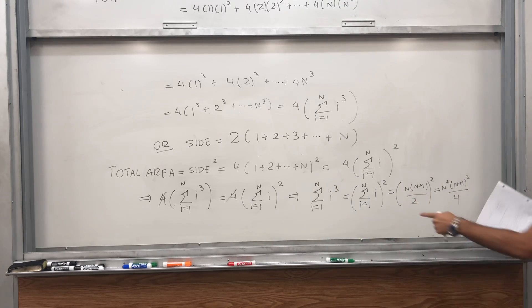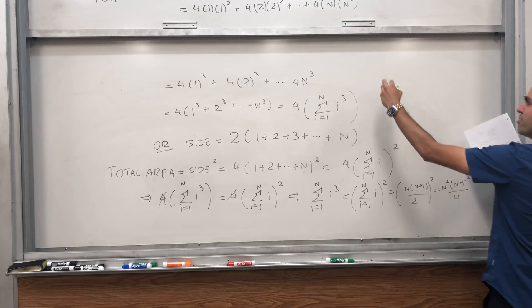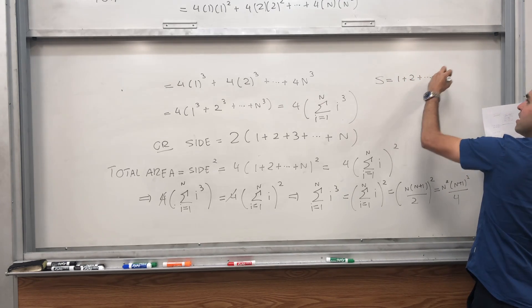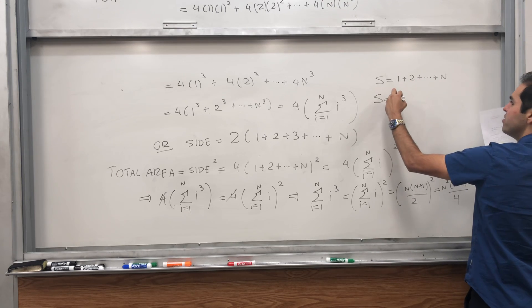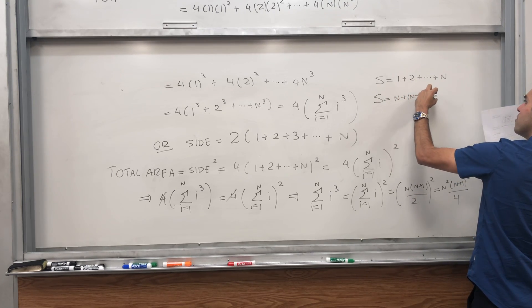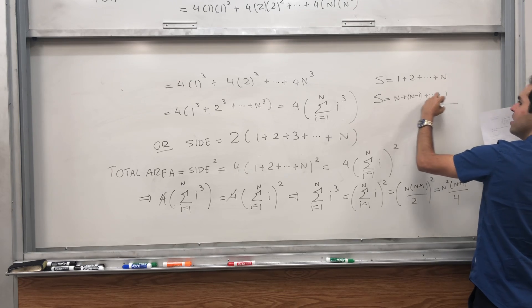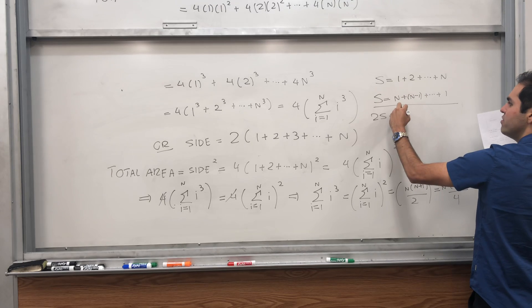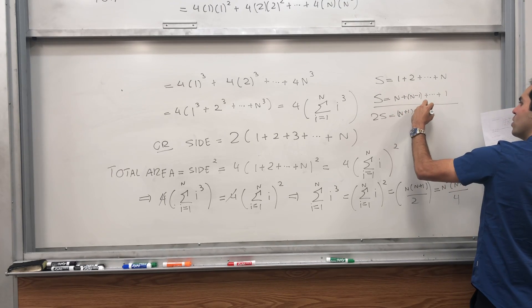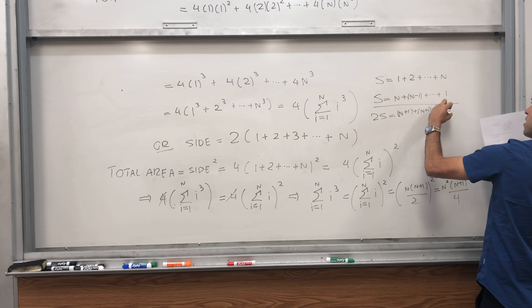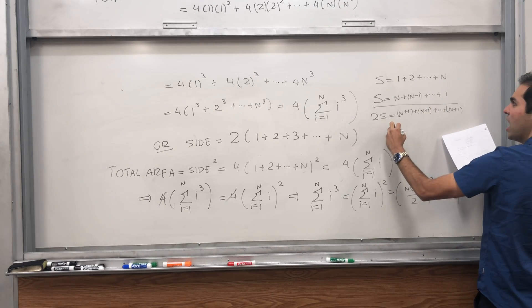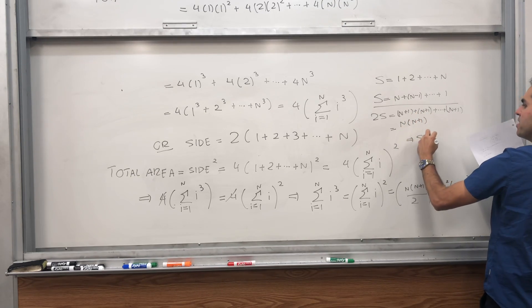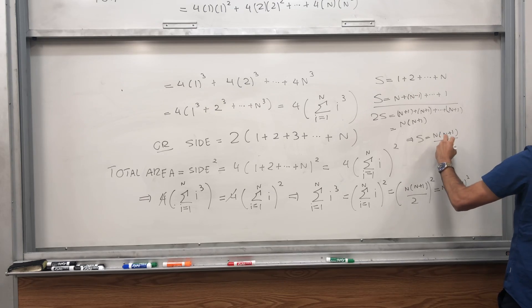Just for sake of completeness, if you want to know why this is true, let s be the sum of all the integers up to n. Then you can rewrite s, just reverse everything. It's n plus n minus 1 plus dot dot dot plus 1. Then sum those two up. So 2s, each sum gives you n plus 1, plus n plus 1, plus dot dot dot plus n plus 1. So how many times? Well, n times n plus 1, so our sum is just n times n plus 1 over 2.